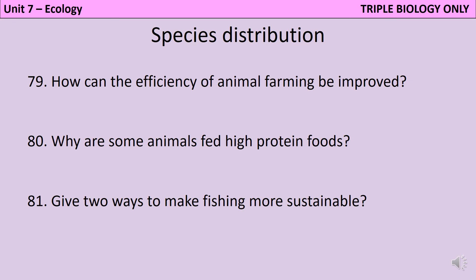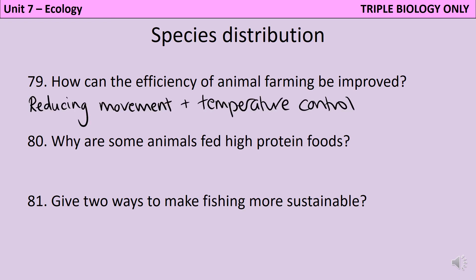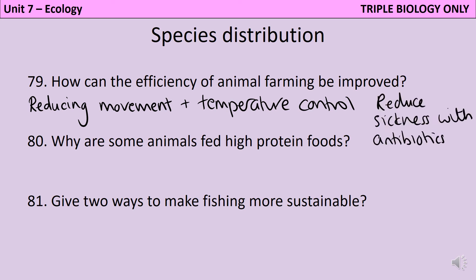As we've seen when talking about the transfer between trophic levels, animals waste a huge amount of energy both by moving around and by moderating their own body temperature. This means the most efficient animal farming happens where animals are kept in close quarters, aren't able to move a great deal, and the temperature is kept warm enough that they never need to shiver. To prevent them getting sick, animals may be fed prophylactic antibiotics — given before they even become sick — to prevent the transfer of diseases. Many of these animals are also fed high-protein foods to enable them to put on muscle quickly and grow very fast.